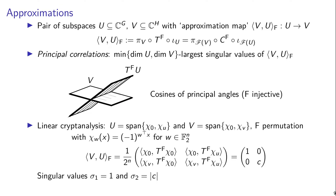Here we have these vector spaces U and V of the form that I described before. Let's assume that F is a permutation just for simplicity. So now the approximation map is going to be a 2 by 2 matrix when we express it in the basis for U and V consisting of these chi functions.